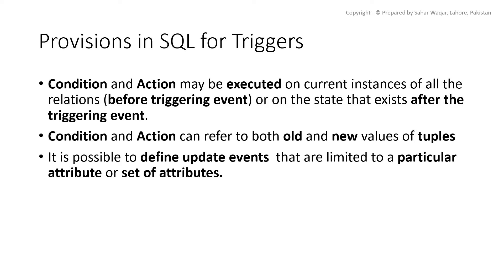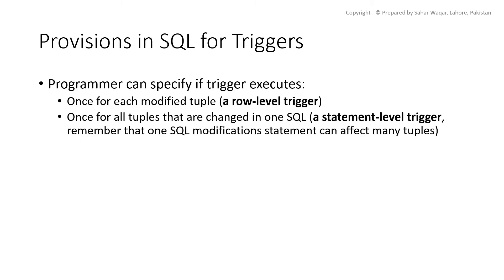It is also possible to define events that only refer to a specific attribute or set of attributes — for example, if attribute X changes, then perform action Y. There can be two options for the execution of triggers: row level and statement level.